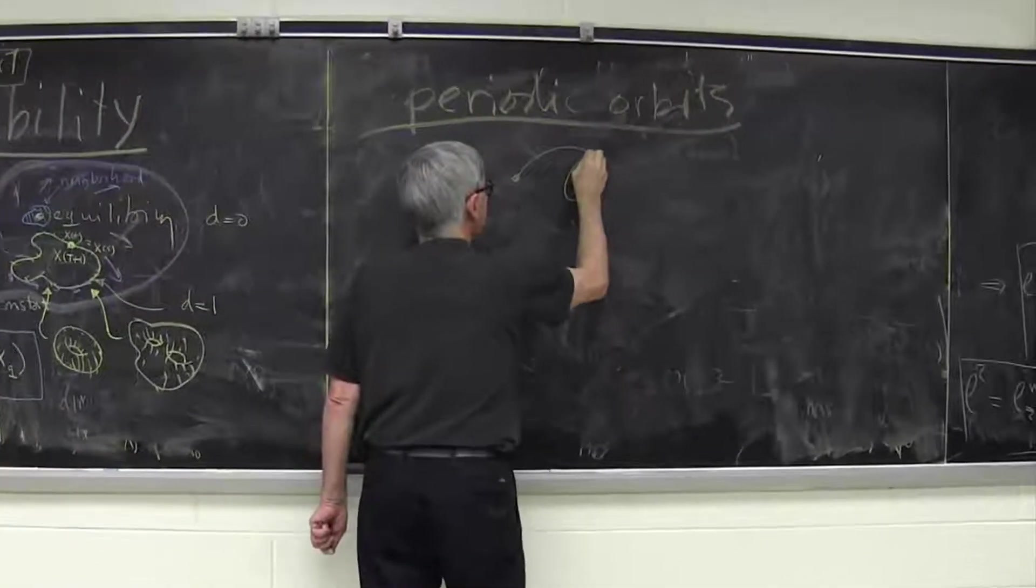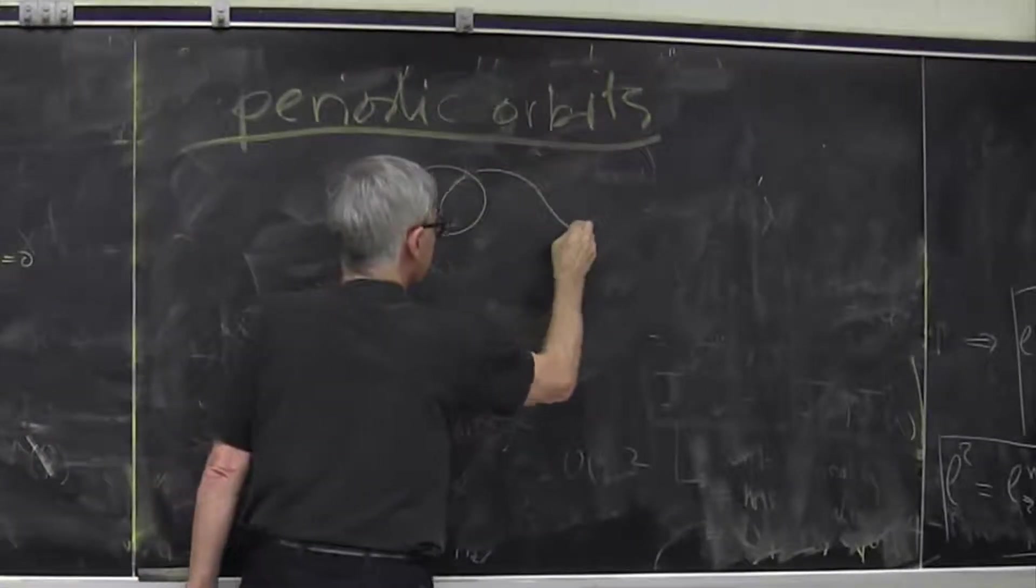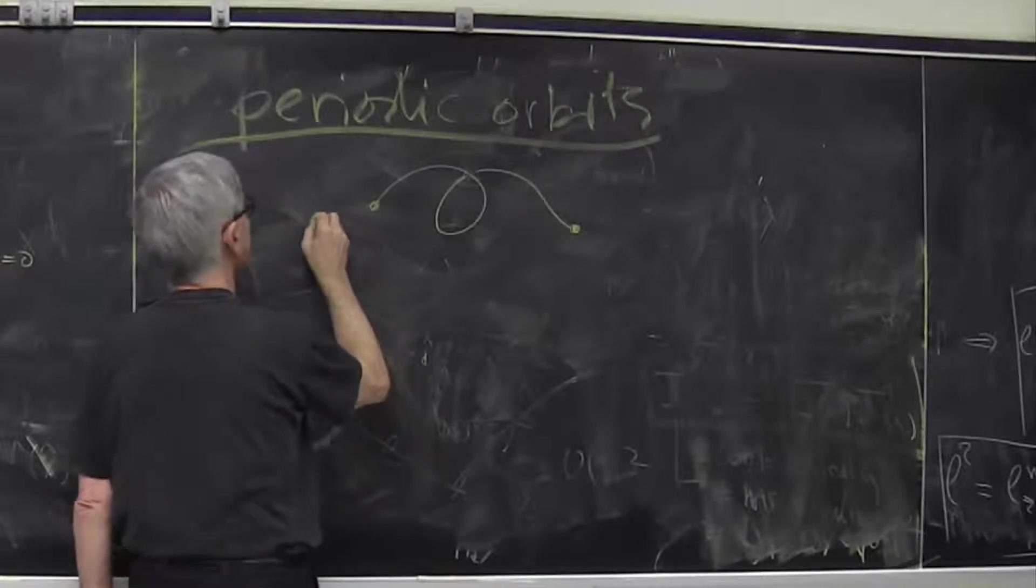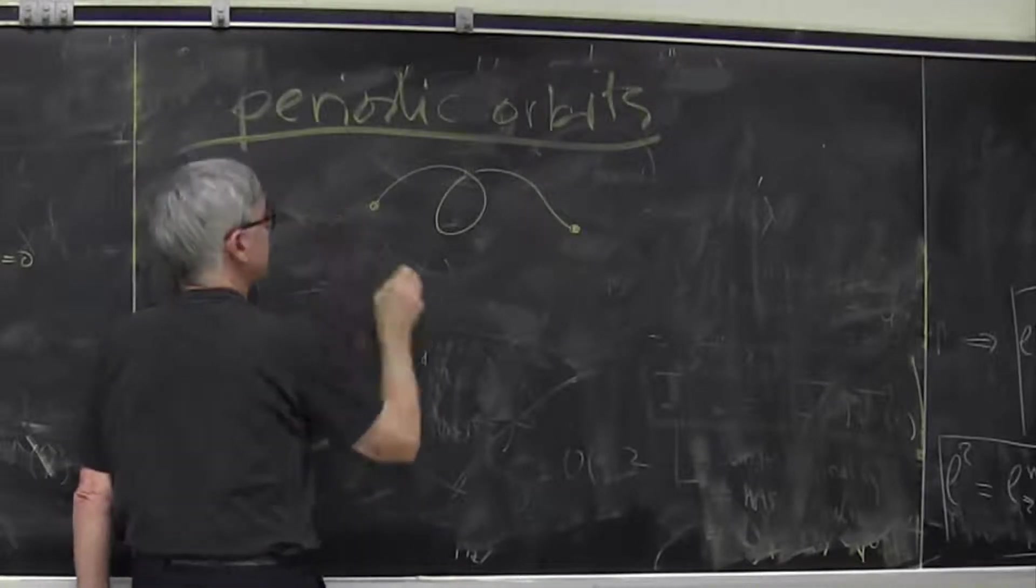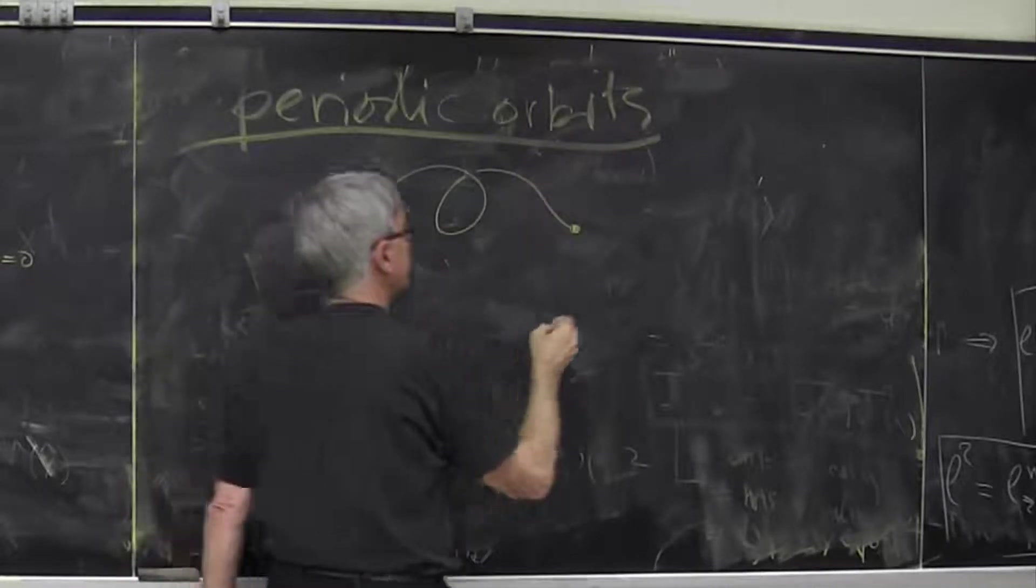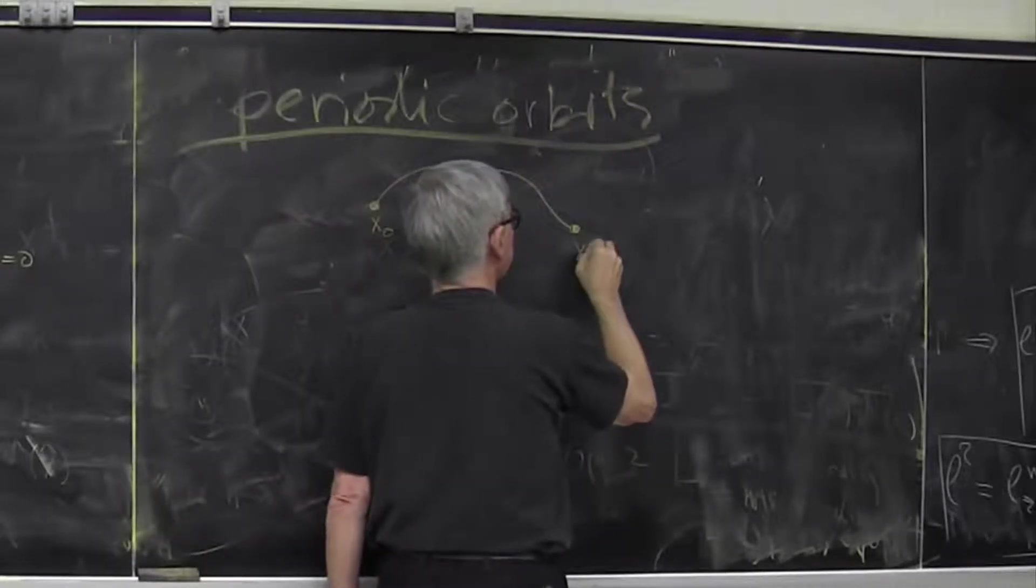If you remember when I discussed the general Jacobian, when I discussed Jacobian where you start at x0 and end up at xt,